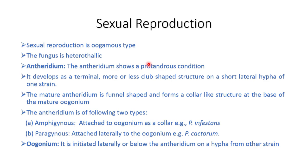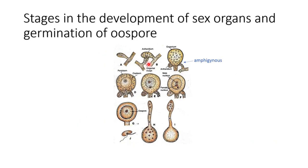Sexual reproduction in Phytophthora is oogamous. In oogamous reproduction, two kinds of gametangia are formed: an antheridium and an oogonium. The antheridium is protandous, meaning it develops before the oogonium. This fungus is a heterothallic fungus, meaning formation of the antheridium and oogonium takes place when hyphae of two opposite mating strains come into contact.